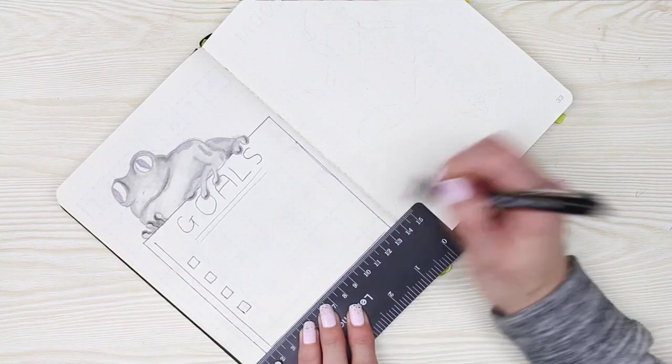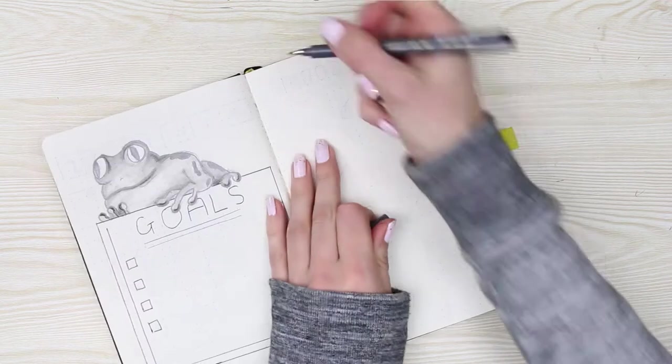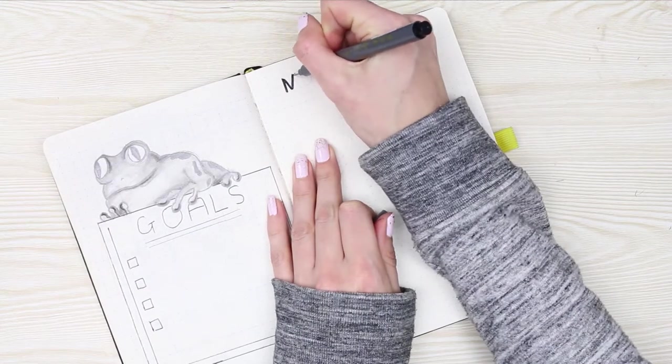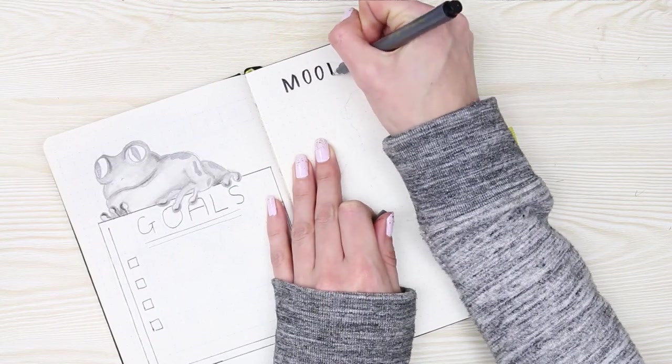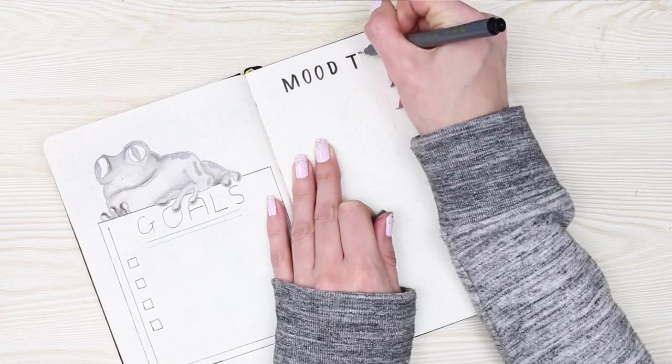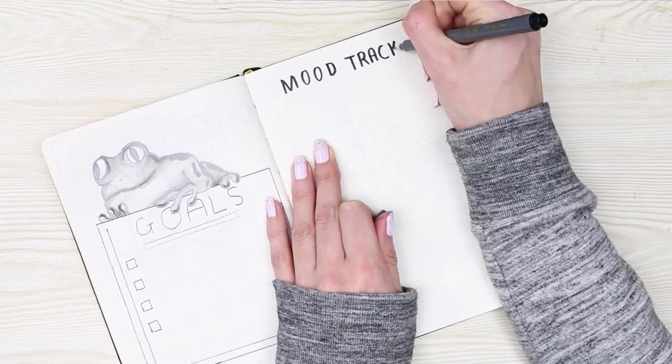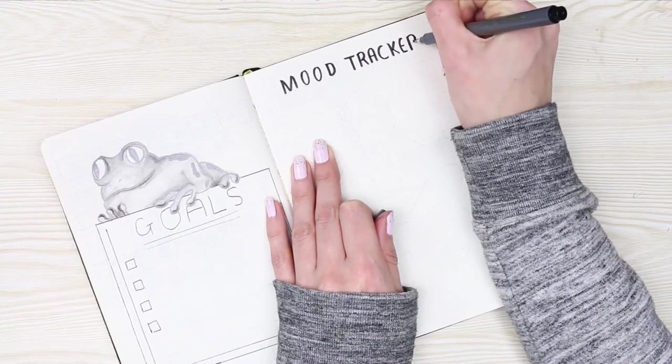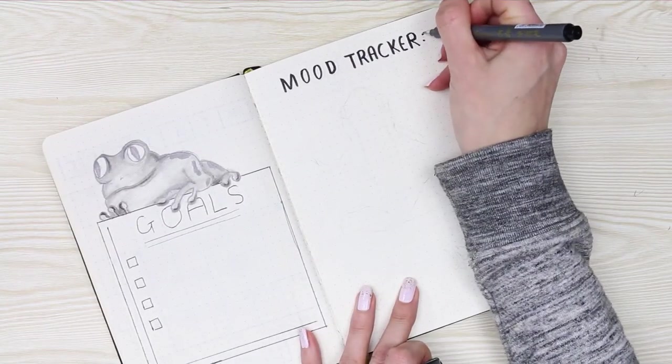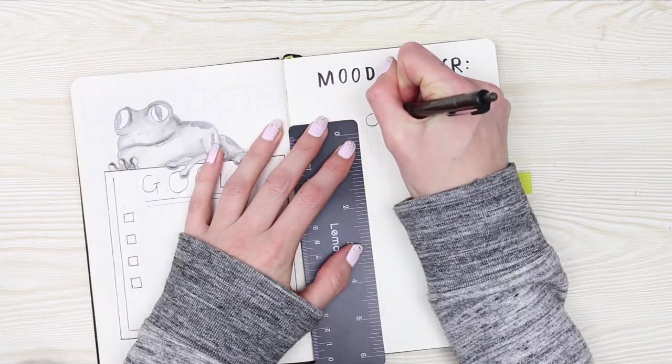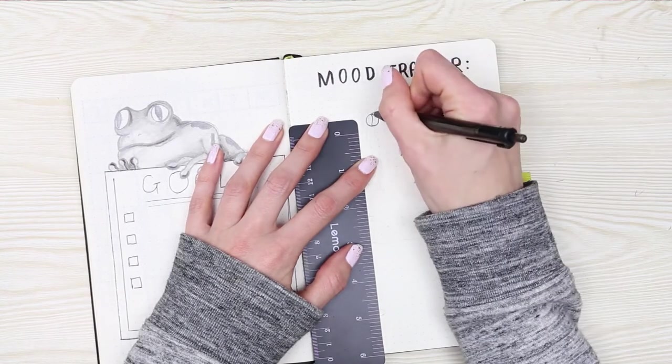On the next page here I've decided to add a mood tracker. I don't always add mood trackers into my monthly spreads in my bullet journal because if I do, I find myself kind of making myself feel a way so I can fill in the little spaces.